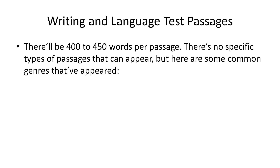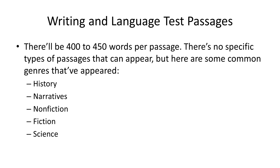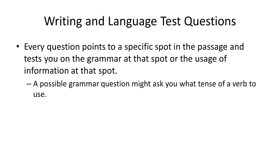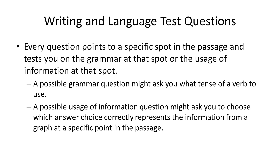There will be 400 to 450 words per passage. There are no specific types of passages that must appear, but common genres that have appeared in the past include History, Narratives, Non-fiction, Fiction, and Science. Every question points to a specific spot in the passage and tests you on the grammar at that spot or the usage of information at that spot. A possible grammar question may ask you what tense of a verb to use. A possible usage of information question might ask you to choose which answer choice correctly represents the information from a graph at a specific point in the passage.